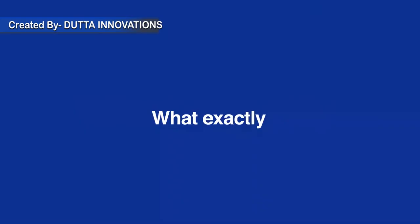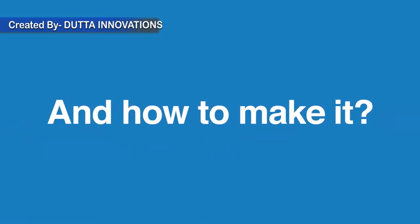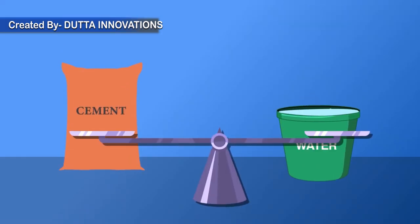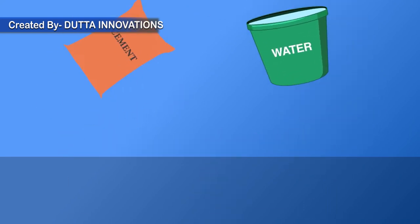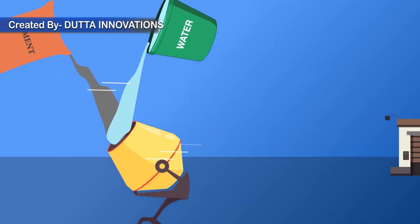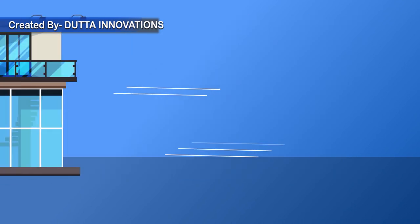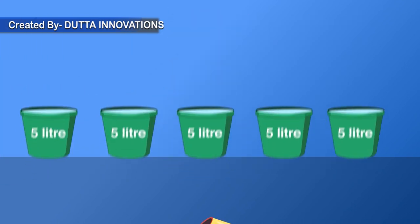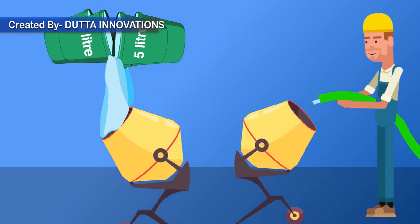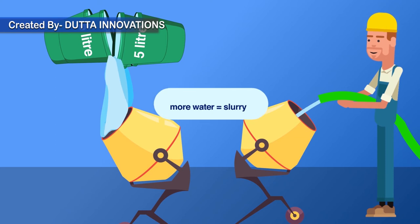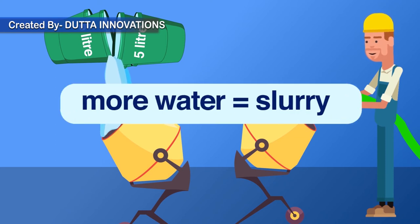So what exactly is good concrete and how to make it? For good concrete, the ratio of water and cement should be maintained properly for better strength and durability of your house. If we measure water in 5-litre cans, we can easily add 25 litres by filling 5 times. But usually masons use pipes for adding water, which results in uncontrolled and excess water in the concrete, making it slurry.